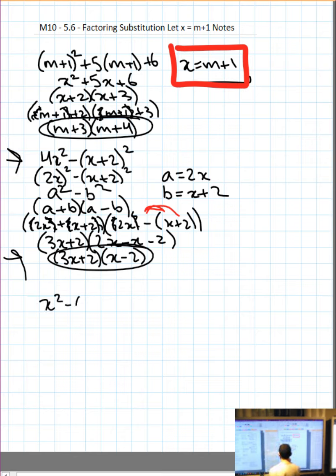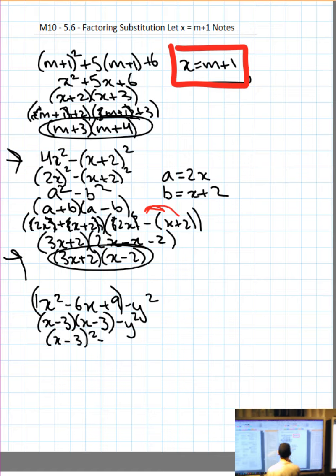The example down at the bottom right is interesting. x squared minus 6x plus 9 minus y squared. Well, what I can do is I can group the first three terms. I know that now I'm factoring trinomials when a is equal to 1. So two numbers that multiply to get 9 and add to get negative 6 are negative 3 and negative 3. So x minus 3, x minus 3, carry everything else down, minus y squared, which is just x minus 3 all squared minus y squared.